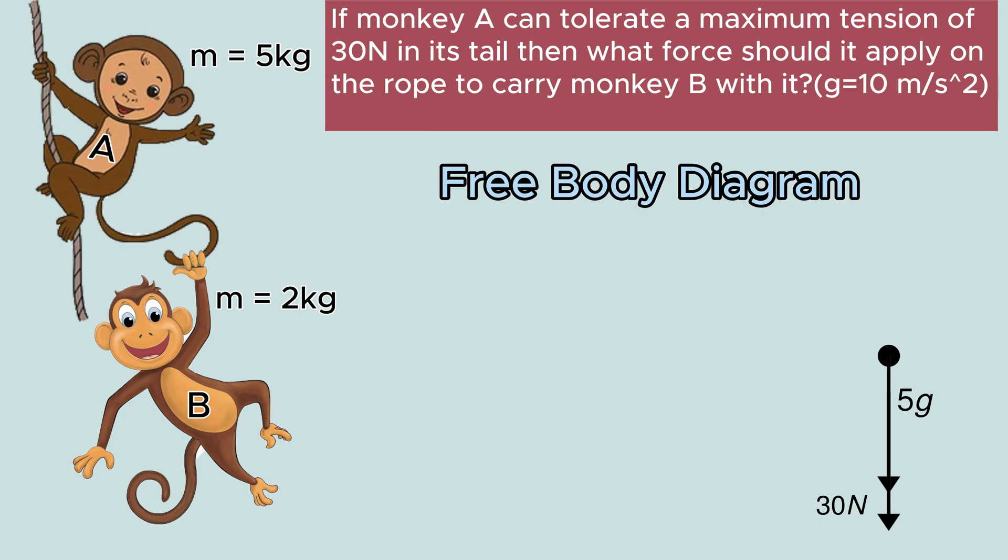Now let us talk about the forces that act in the upward direction. The two forces are number 1, tension in the rope, and number 2, the force MA with which the monkey is climbing upwards. Here A is the acceleration with which the monkey is climbing upwards.